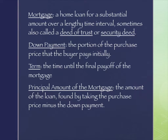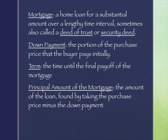A down payment is the portion of the purchase price that you pay at the front. Term is new — we haven't heard that word before. Term is just the length of the loan in years. For mortgages, the three most common terms are 15-year, 20-year, and 30-year notes. The principal amount of the mortgage is simply the amount you're financing — the amount of the loan is found by taking the purchase price minus the down payment.